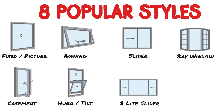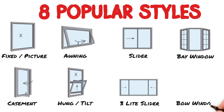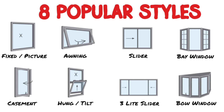Sometimes these have a seat at the bottom, and other times the wall itself extends out, in which case that one is called a walkout bay. A bow window is an appropriate name because it has a bow shape on the interior. It usually consists of four to five pieces attached in a curved fashion.